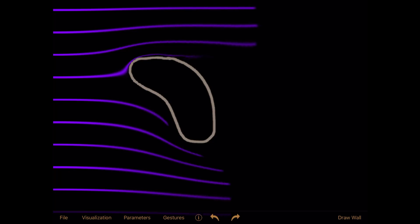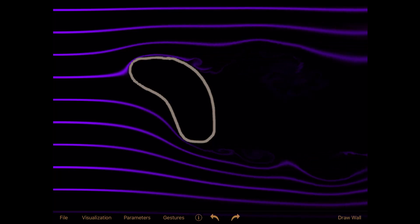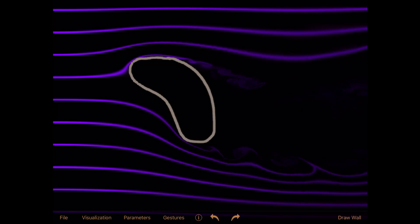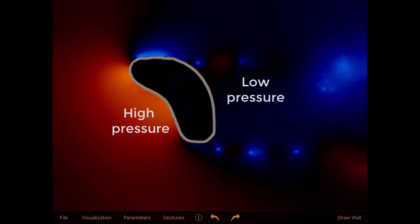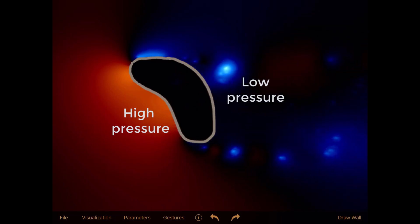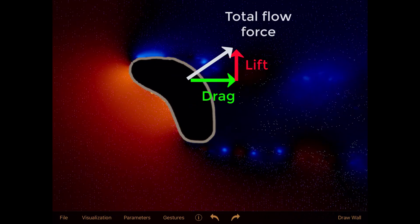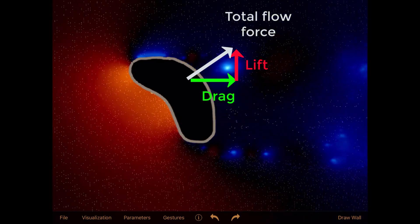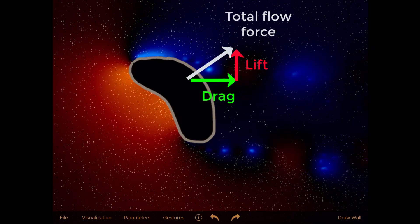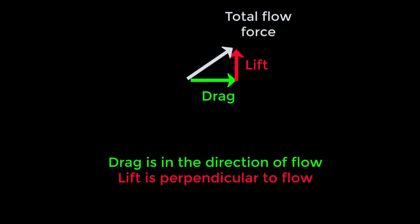Here we have flow around an object and you see the flow separating behind the object. As a result of that we have high pressure on the upstream side and low pressure on the downstream side. This color is pressure here. So the net force is going to be as shown and we break that force into a component of drag along the flow direction and lift perpendicular to flow.